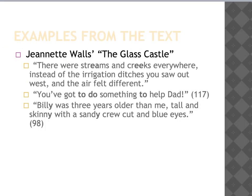Jeanette Walls also uses assonance in The Glass Castle. 'There were streams and creeks everywhere instead of the irrigation ditches you saw at Walls, and the air felt different' — she repeats that hard e sound when describing a place. 'You've got to do something to help dad' — that repeats the obvious 'oo' sound in 'you,' 'do,' and 'to.' And then 'Billy was three years older than me, tall and skinny with his sandy crew cut and blue eyes' — she repeats that e sound multiple times when describing Billy, the boy she met.